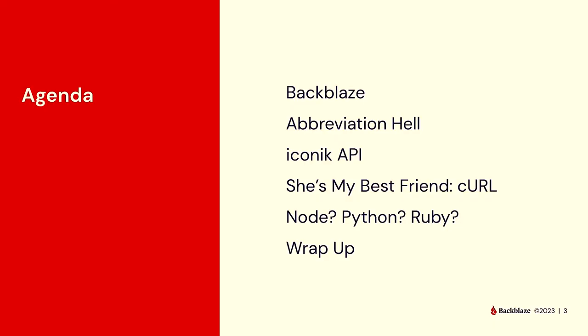I'll give you a brief introduction to Backblaze — who we are and what we do — and walk you through some of the abbreviation hell that is HTTP, JSON, URLs, REST, and everything else. We'll take a look at the Iconic API and Iconic's media asset management platform, and I'll give you a flavor of calling some APIs with curl and then Python.